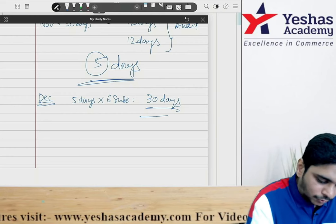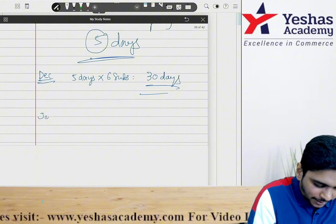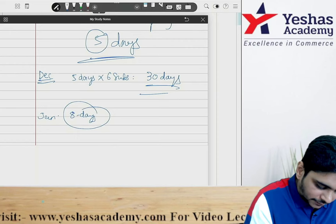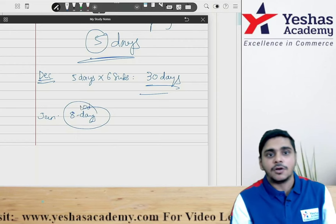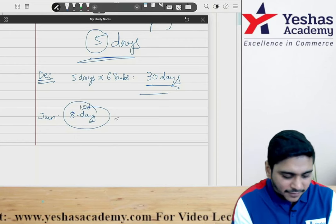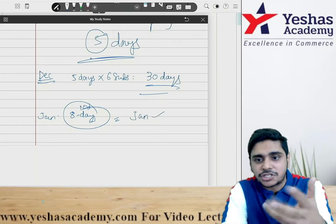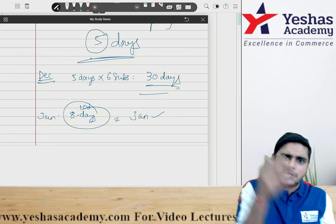Now January also, I will be having more 8 to 10 days. So whatever is your weak subject, 8 to 10 days, whatever is your weakest subject, you again revise in January. Maybe somebody's accounts is weak, somebody's costing is weak. Then boss you can easily revise it.